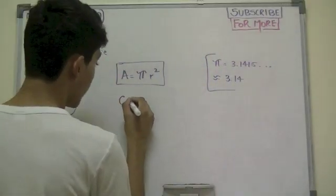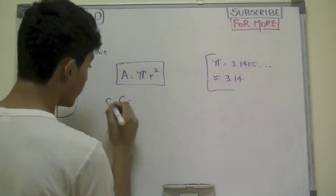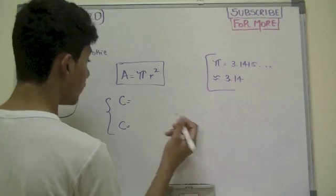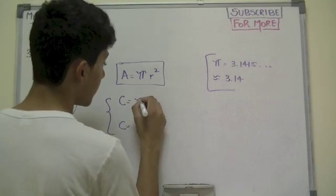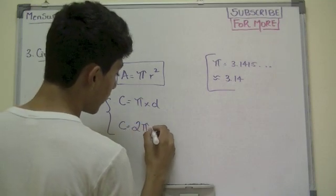The circumference of a circle - there are two formulas, and if you use either one, you would end up with the same answer: π times the diameter, or 2πr.